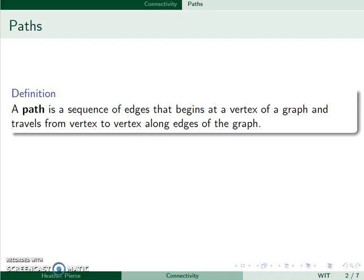A path is a sequence of edges that begins at a vertex of the graph and travels from vertex to vertex along the edges of the graph.